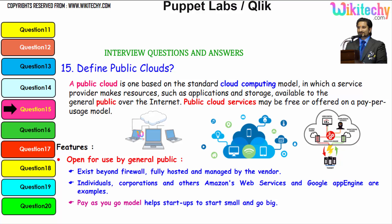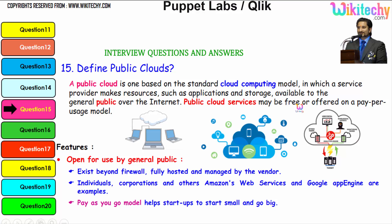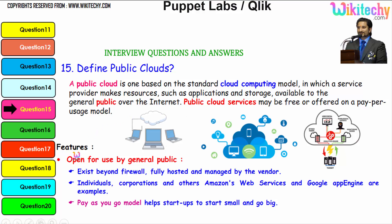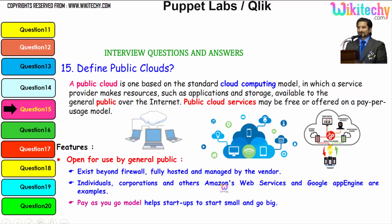Moving towards the public cloud definition: a public cloud is one based on the standard cloud computing model in which the service provider makes resources such as applications and storage available to the general public over the internet. Public cloud services may be free or offered on a pay-per-usage model. The features of a public cloud include being open for use by the general public, existing beyond the firewall, and being fully hosted and managed by the vendor. Web services and Google App Engine are typical examples.